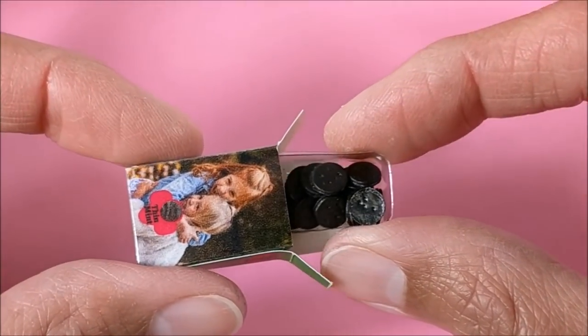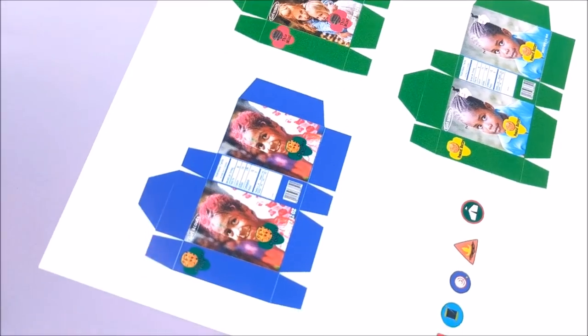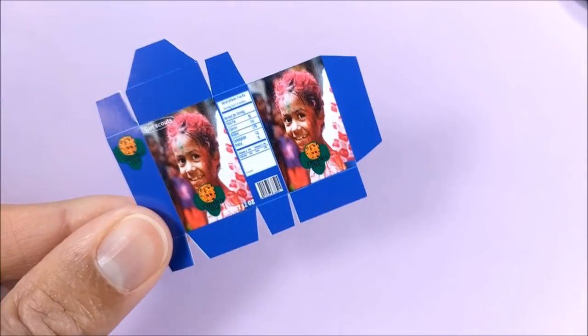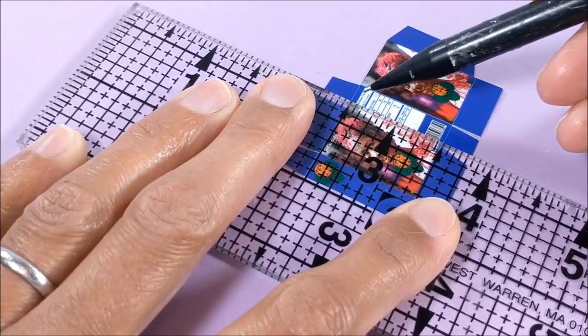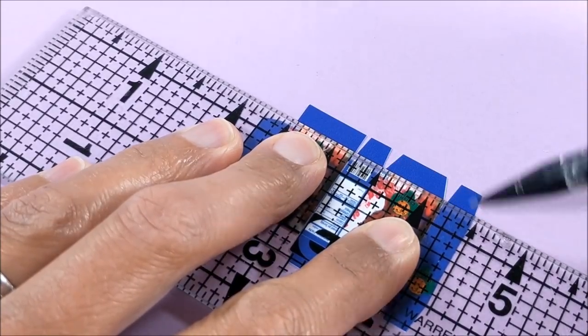Okay guys, so I start by printing the printable which you can access by clicking on the link in the description section. I print mine on glossy photo paper, but of course you can just print it on cardstock or even paper. I score on all of my lines and fold.